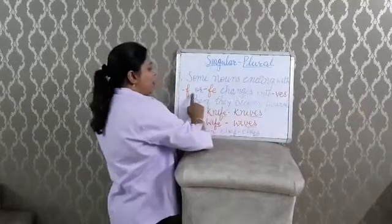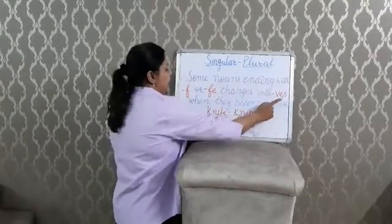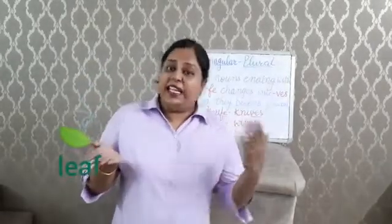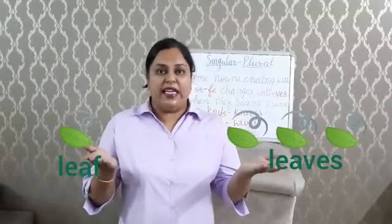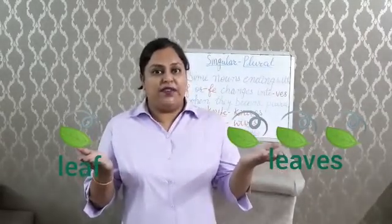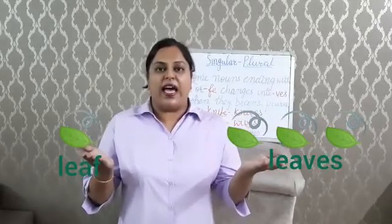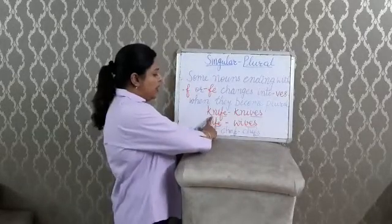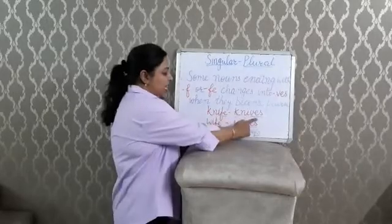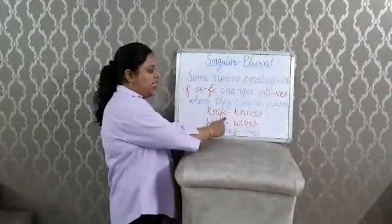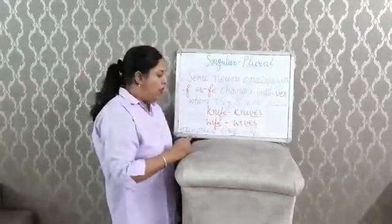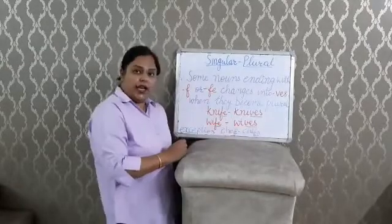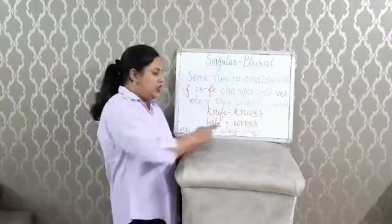Some nouns ending with 'f' or 'fe' change into 'ves' when they become plural. For example, leaf becomes leaves — we changed 'f' into 'ves'. Knife: here we changed 'fe' into 'ves' to get knives. Similarly, wife becomes wives, where 'fe' is changed to 'ves'.